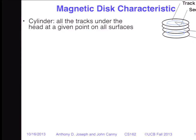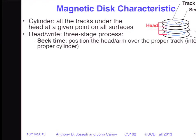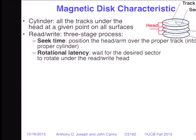If we take all of the tracks on all surfaces of all platters that are under a head at any given time, that forms a cylinder. Reading and writing is a three-stage process: first we move the arm to the appropriate track — that's our seek time. Once on the correct track, we wait for the drive to spin until the proper sector is under the head — that's our rotational delay. Then we read or write the bits — that's our transfer time.